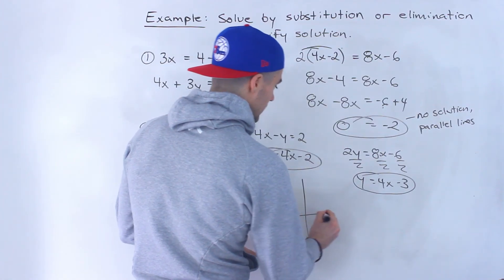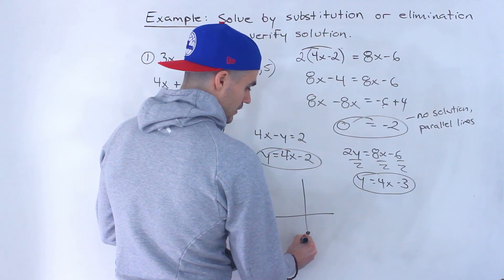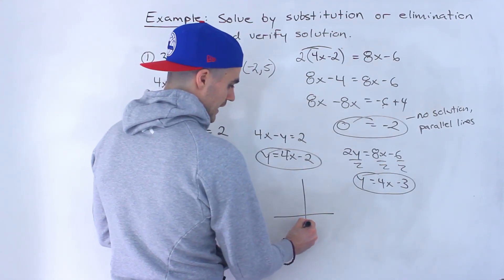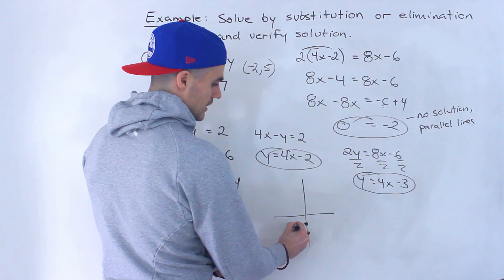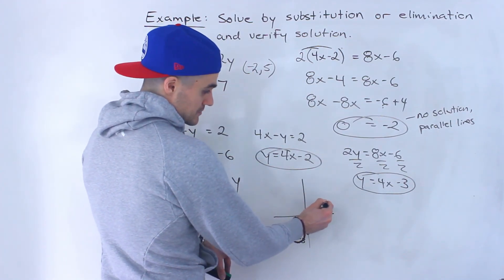So the way this would look graphically, this line would have a b value of negative 3. And then this line would have a b value of negative 2. This is not to scale, by the way. I'm just kind of showing you roughly. And they both have the same slope.